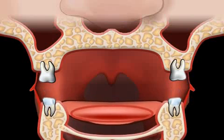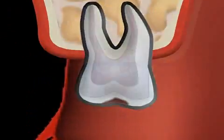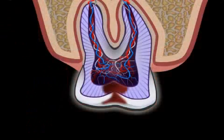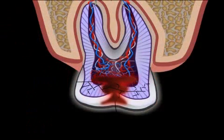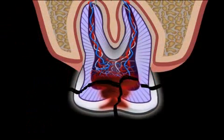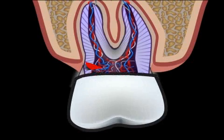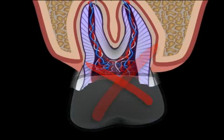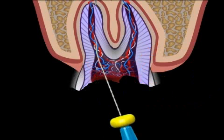Pivot tooth is a slang expression in prosthodontics that refers to a tooth that was restored by means of a pivot in a root canal. If a tooth has been so deeply destroyed by caries that nothing is left of the tooth's crown, then providing it with a dental crown is no longer possible, because the dental crown wouldn't have any stability.